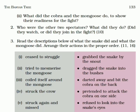Now question number three: read the description below of what the snake did and what the mongoose did. Arrange their actions in the proper order. Ismein phir se dekhenge aap, toh yahaan pe paragraph eleven or sixteen likhha hua hai — it means yeh iska jo answer hai, aapko paragraph number eleven or sixteen mein mil jayega.